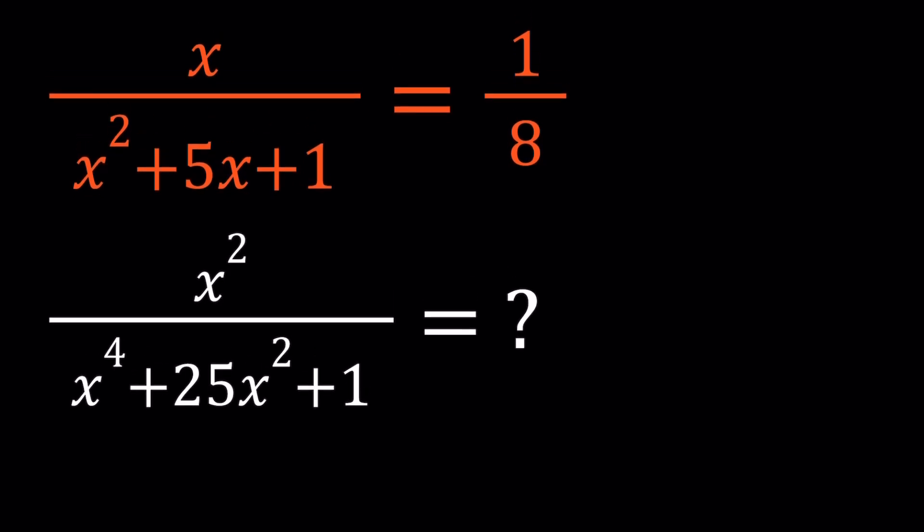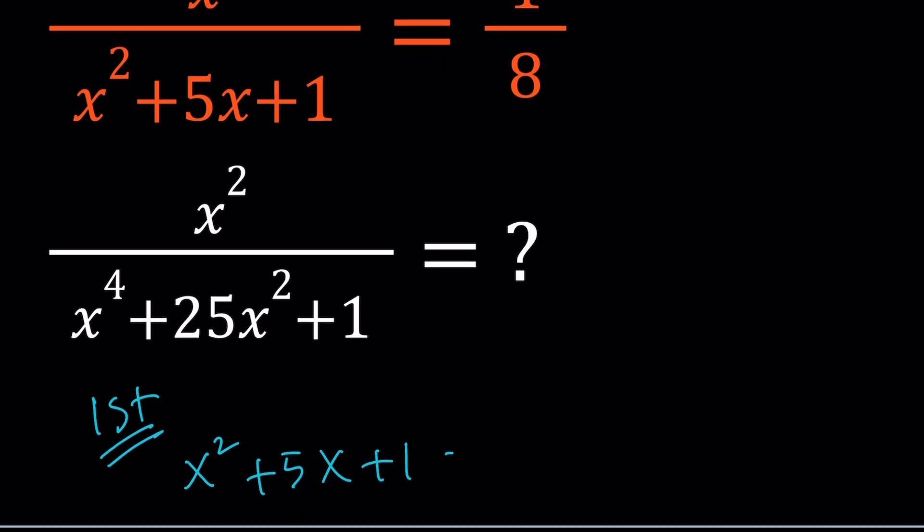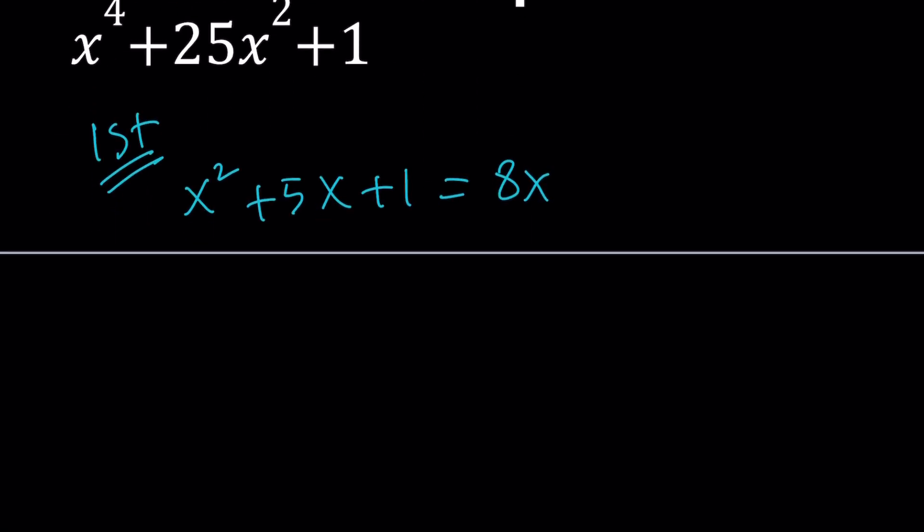I'll be presenting two methods. Let's start with the first one. So for my first method, I'm going to cross multiply. Let's go ahead and multiply x squared plus 5x plus 1 by 1, and then multiply 8 by x. From here, we do get a quadratic equation, which is very easy to solve. Let's go ahead and subtract 8x.